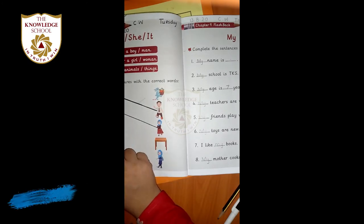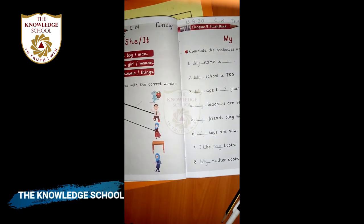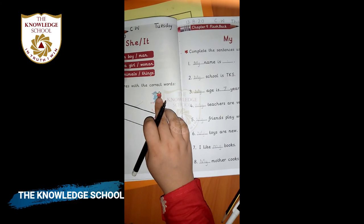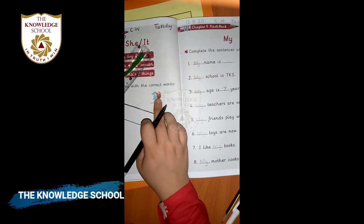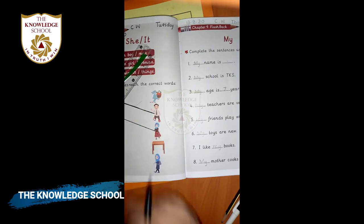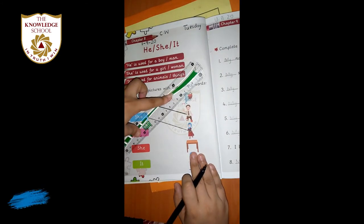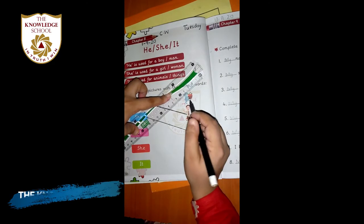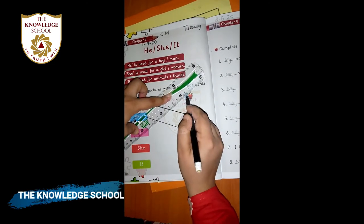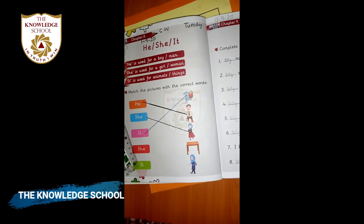Now it is used for animals or things. Look at this picture — it is an animal, it's a rabbit. The rabbit has a basket in its hand and carrots are placed in the basket. So you join 'it' with the rabbit — it is a rabbit.